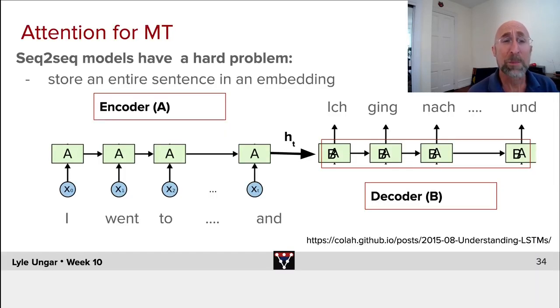So what's the problem with seq2seq models? They sound great. You take in a sequence of words, make a hidden output, take that, feed it into a decoder. It then translates it and says Ich ging nach whatever, etc. This works great for five words, ten words. It's terrible for a whole Wikipedia article.